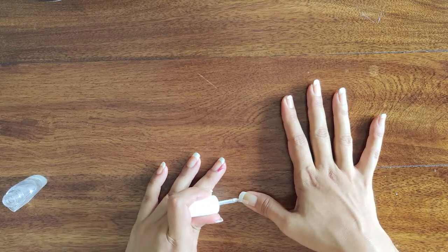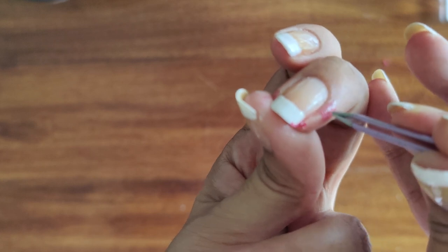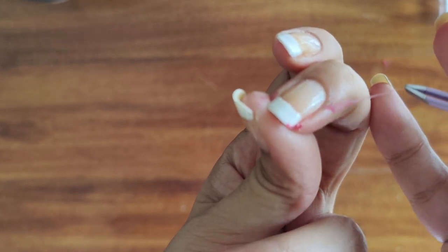Once you're done with the second coat of clear nail polish you can take off the liquid latex that you used earlier and you can use a pair of tweezers to do this.